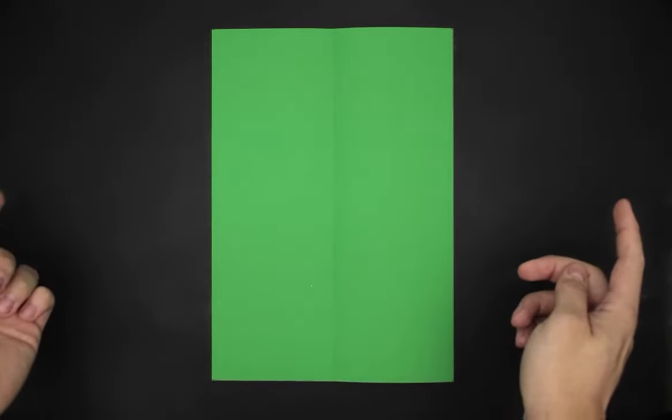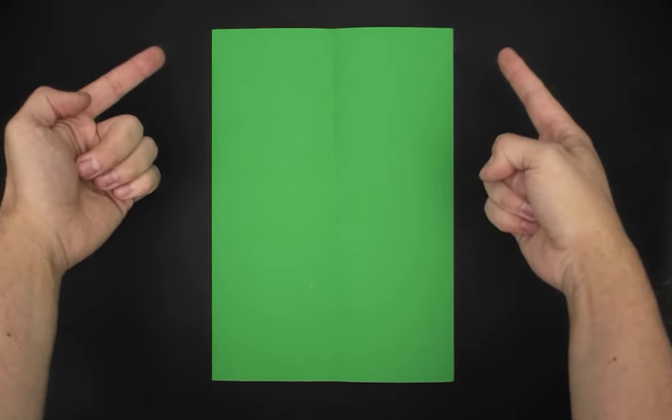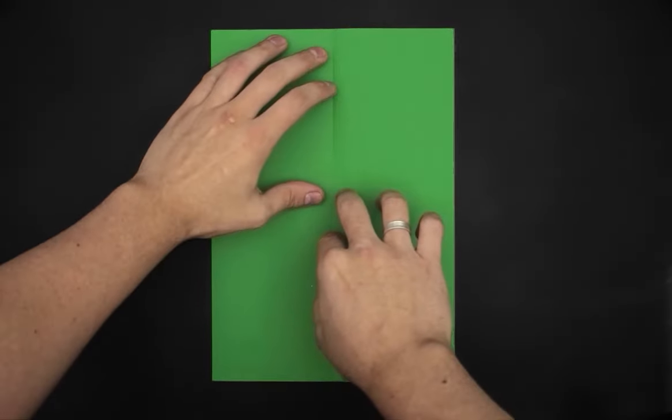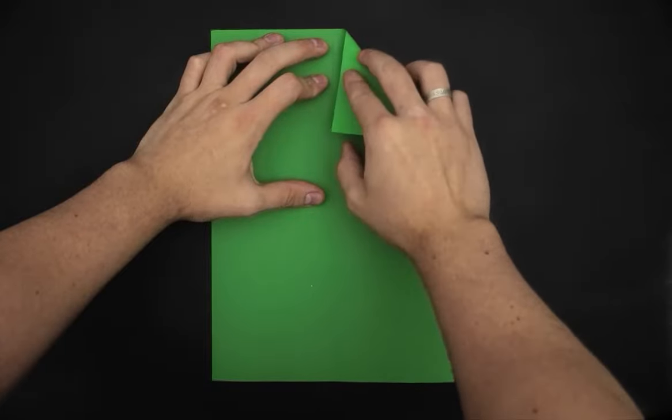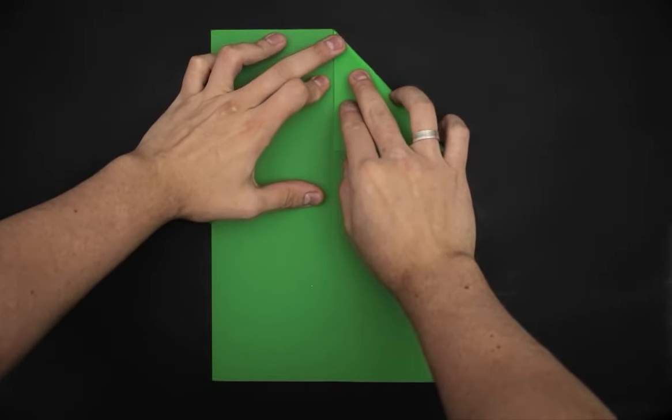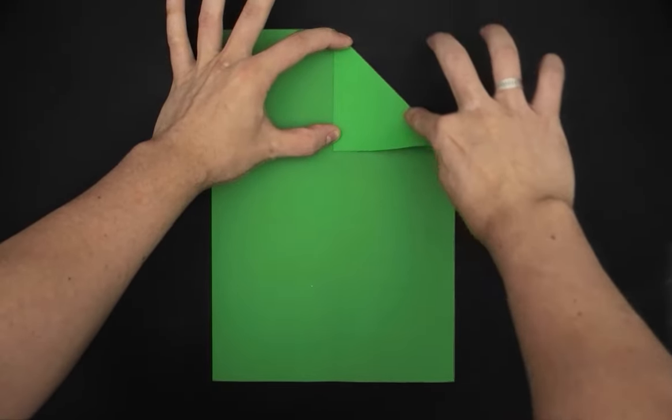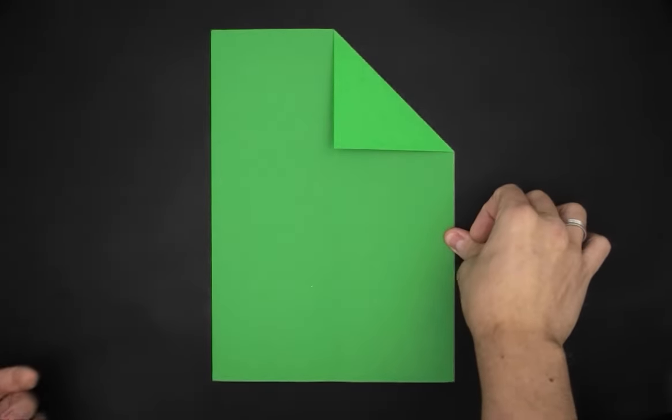For the next step, we'll have to bring the two halves from the top to the middle. We can start with the right side, just like this. We can fold the other side in the same way.